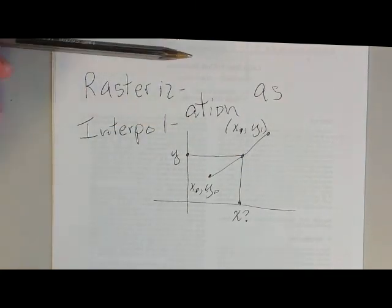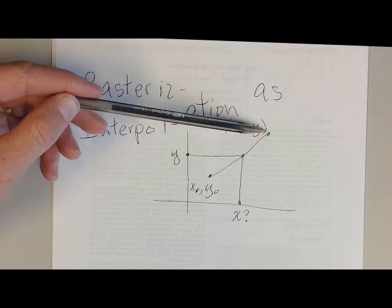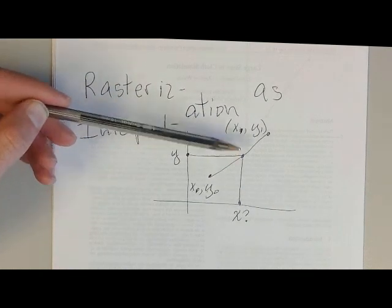In terms of rasterization, this is the same as saying the edge of the triangle goes from this point to this point. We know we're on this scan line y, and we want to figure out the value of x along the edge of the triangle.